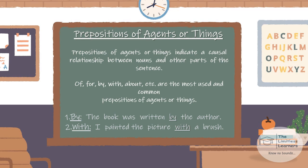Prepositions of agents or things indicate a causal relationship between nouns and other parts of the sentence. Common ones include: for, by, with, about, etc. Examples: 'The book was written by the author.' 'I painted the picture with a brush.' Here, 'by' and 'with' are the prepositions of agents.